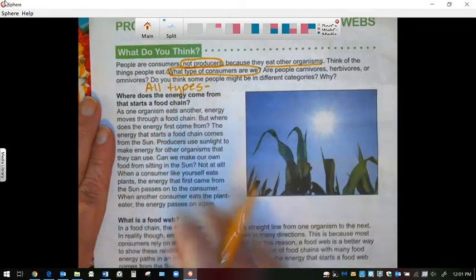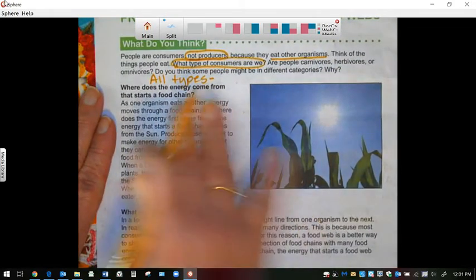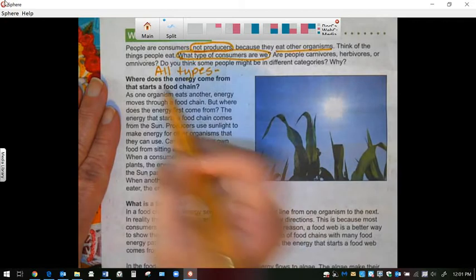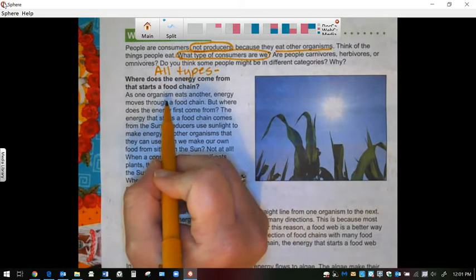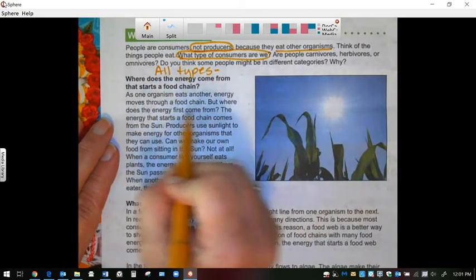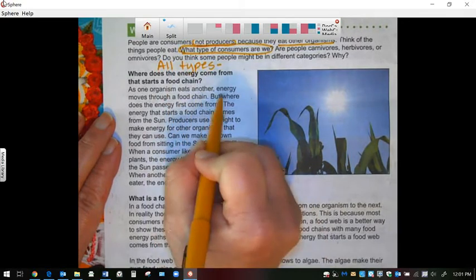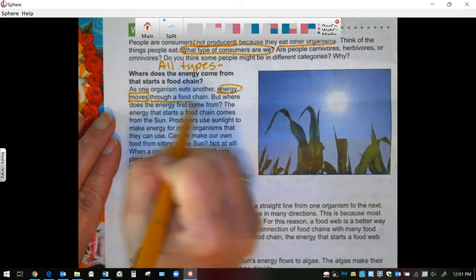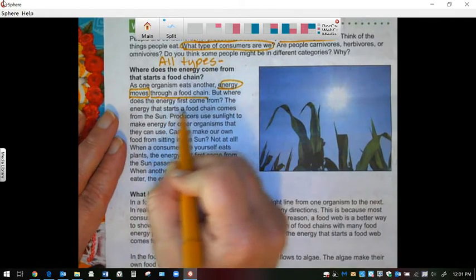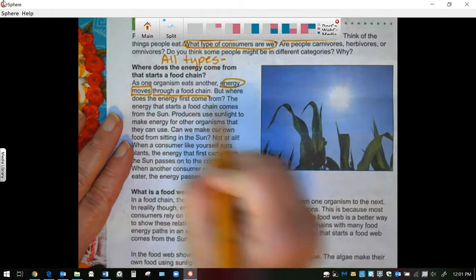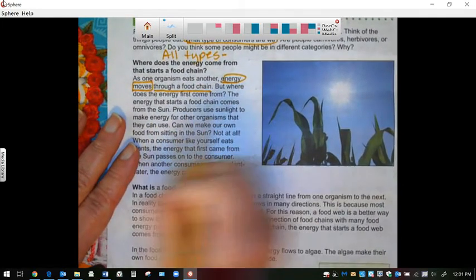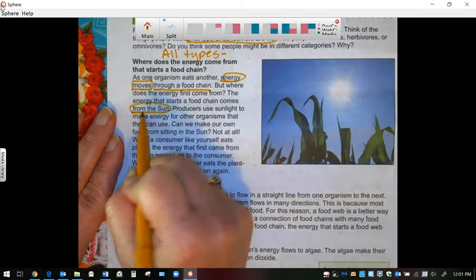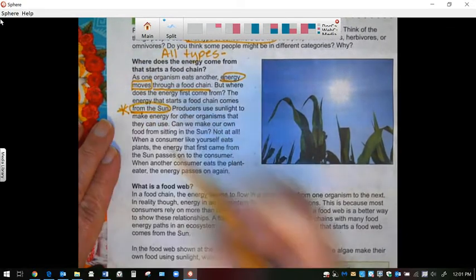Where does the energy come from that starts a food chain? As one organism eats another, energy moves through a food chain. But where does the energy first come from? The energy that starts a food chain comes from the sun. So this is very important. It starts with the sun.